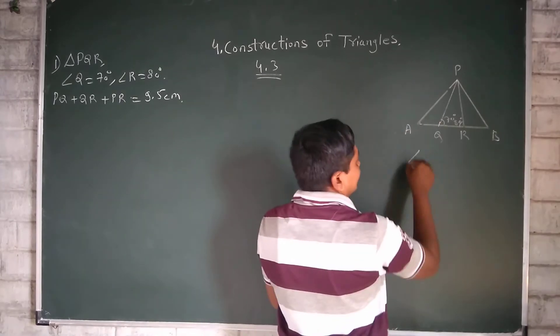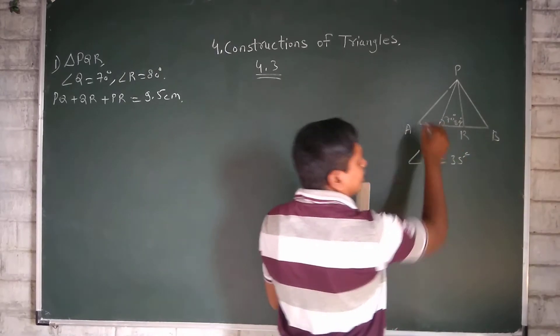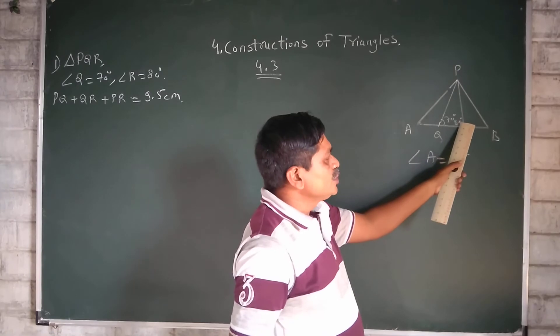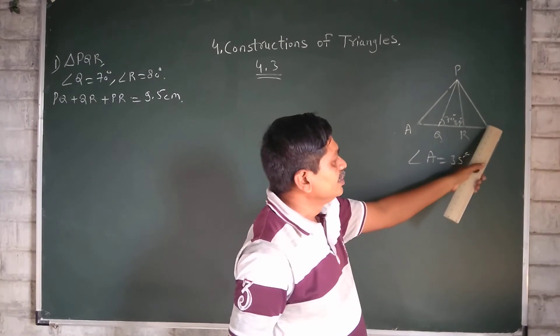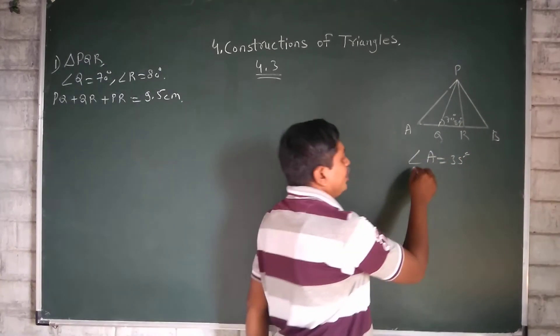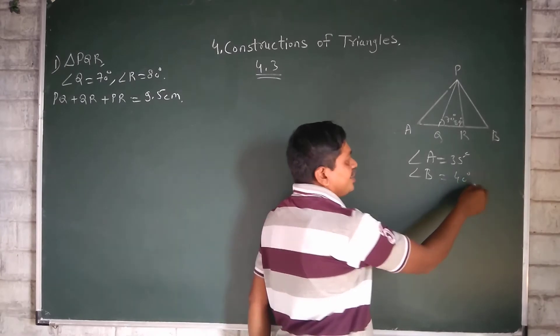So Angle A is 35. This is 80 degree. Angle B will come, we have to take 40 degree.